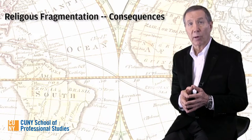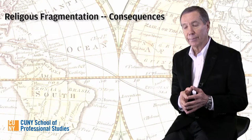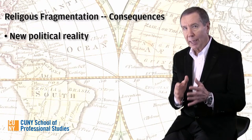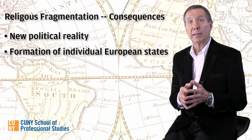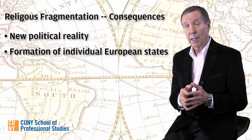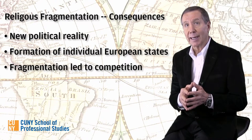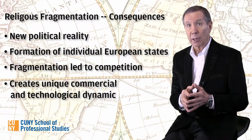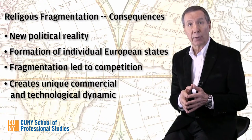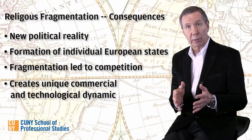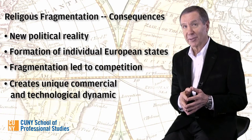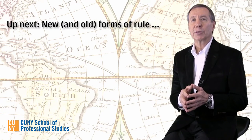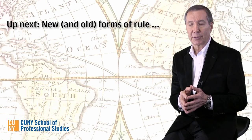Let's summarize all this in terms of the changes that religious fragmentation brought about in the 16th century. First, it created a new kind of politics. The divisions that emerge in post-Reformation Europe allow the formation of individual national states. Second, fragmentation led to competition, creating a dynamic in Europe that is quite unlike any we see in other Eurasian empires, including the Ottoman, Mughal, and Chinese empires, as you'll discover in the coming weeks. Up next, we'll look at how the emerging European nation-states govern themselves.